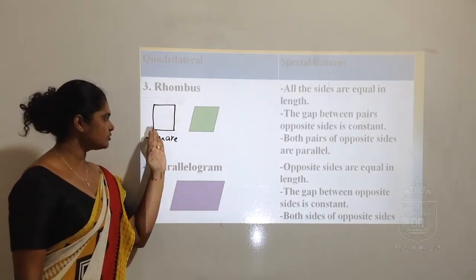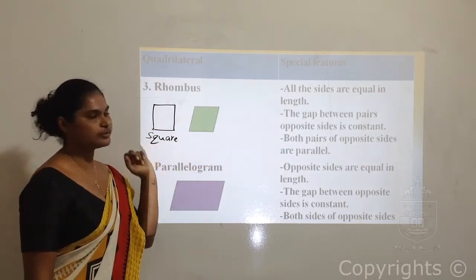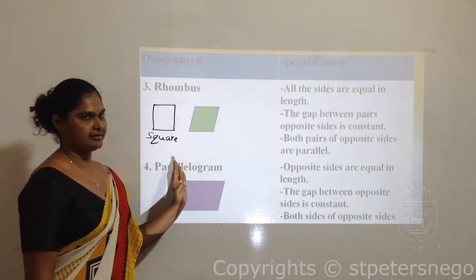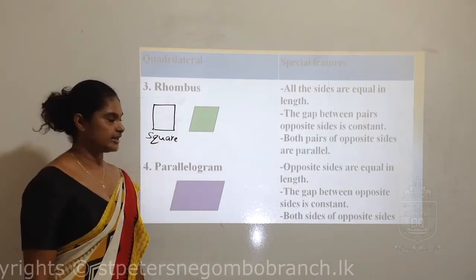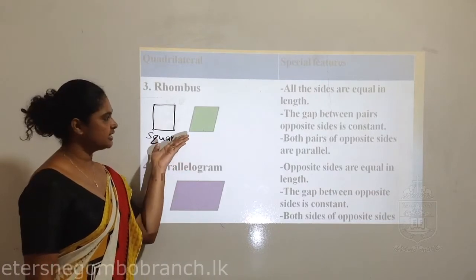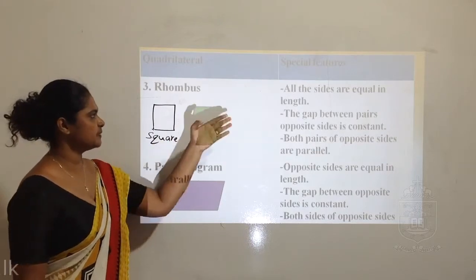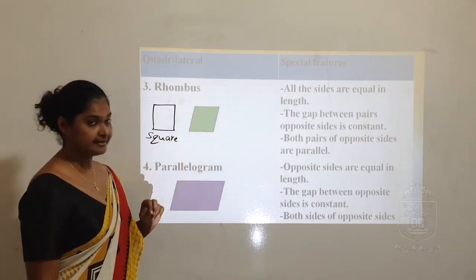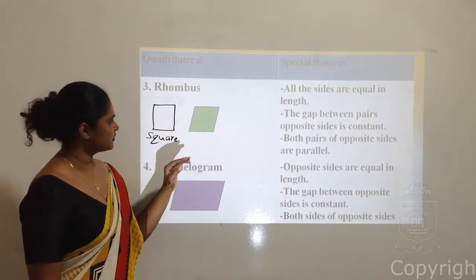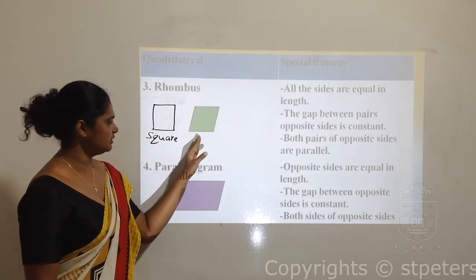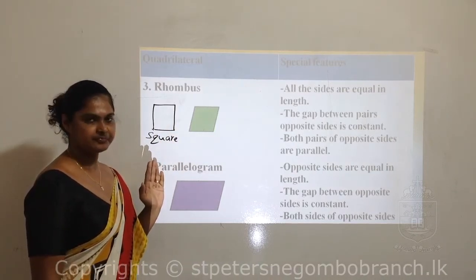In a square, all four angles are right angles - 90 degrees and equal magnitude. But in a rhombus, the angles are different from each other - they are not right angles. Some angles are smaller than a right angle and some are larger than a right angle. The special features of rhombus: all four sides are equal in length, and the gap between opposite sides is constant.